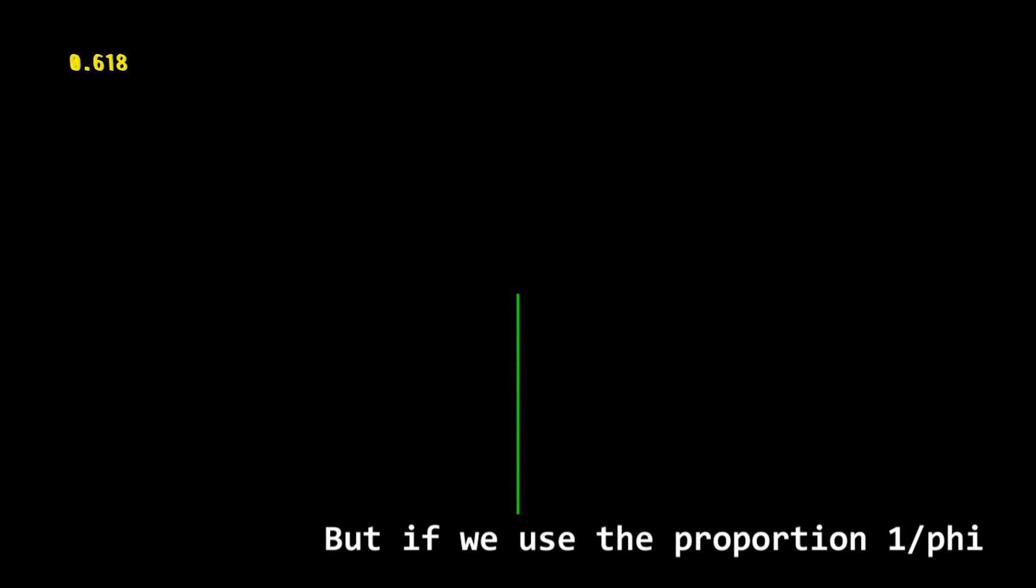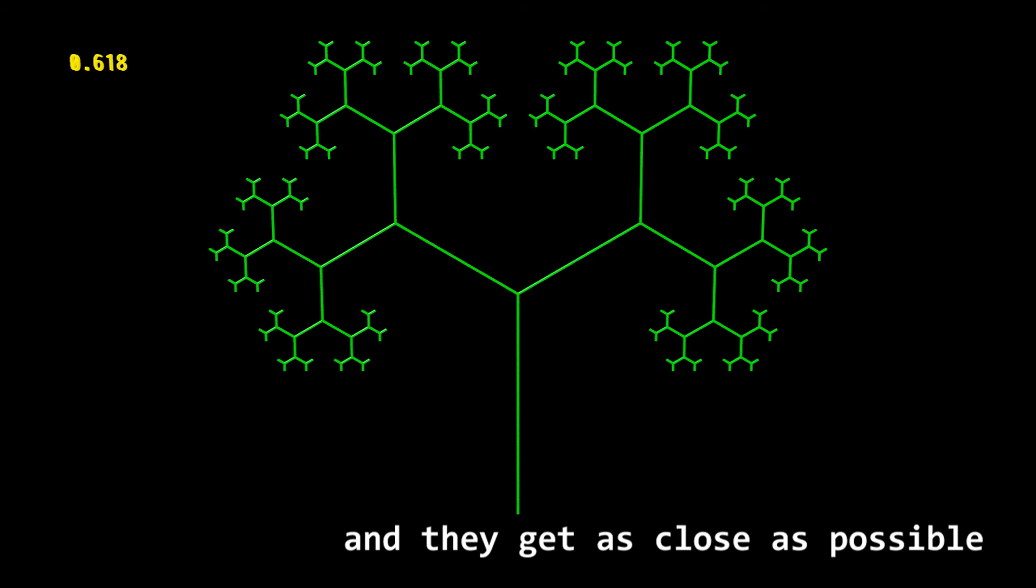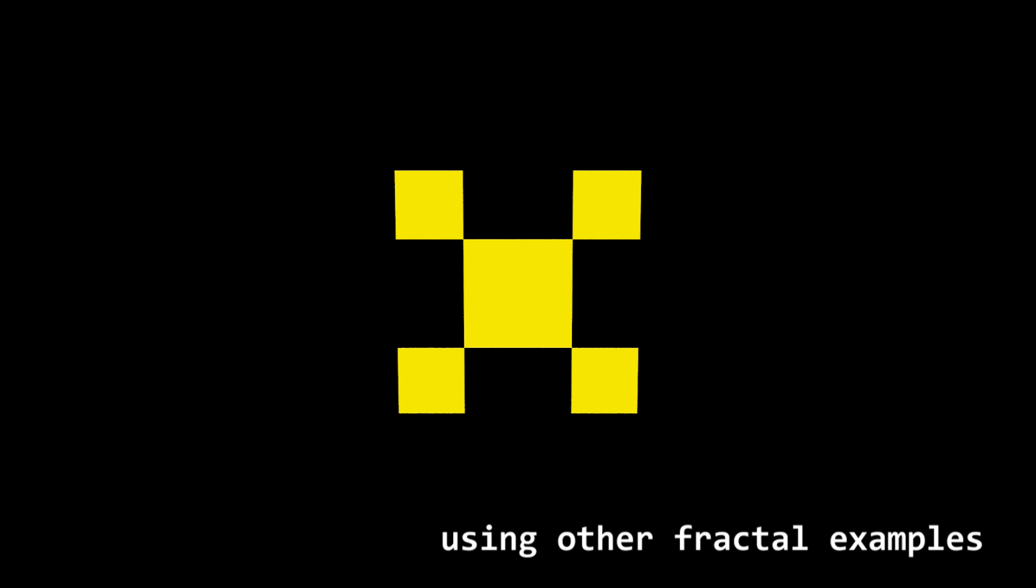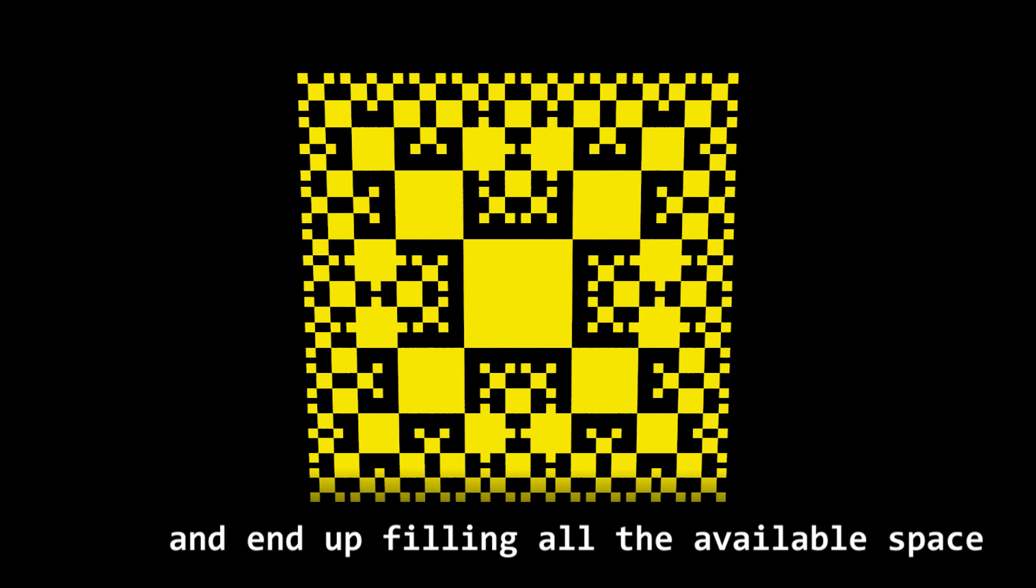But if we use the proportion 1 divided by phi, we can see that the branches do not overlap and they get as close as possible. A fact that may better be seen using other fractal examples that grow with the proportion 1 divided by phi and end up filling all the available space.